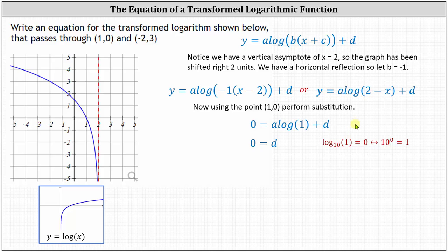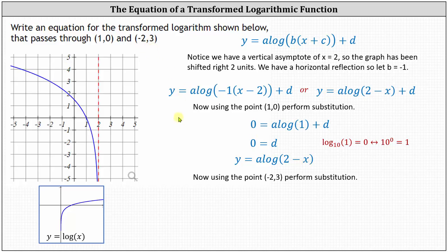Therefore, the equation is in the form y equals a times common log of the quantity two minus x. Using the second point (-2, 3), we substitute negative two for x and three for y. This gives us three equals a times common log of two minus negative two, which simplifies to common log four. Dividing both sides by common log four gives us a equals three divided by common log four.